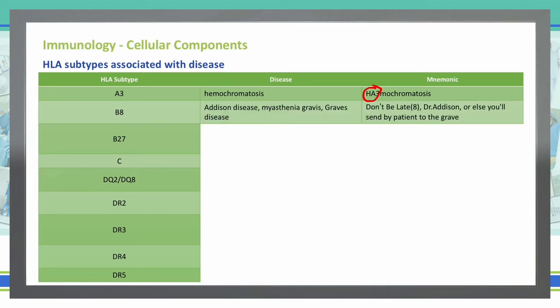To remember HLA-B8, think 'don't be late' — late sounds like eight. And the mnemonic is: 'Dr. Addison, or else you'll send my patient to the grave.' So B8 (B-late) gives us Addison's disease, myasthenia gravis, and Graves' disease.